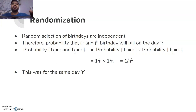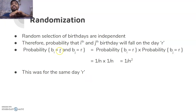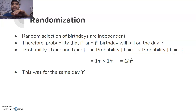We can't work purely with assumptions, so we introduce randomization — we randomly select two people and check whether their birthdays match. Using this randomized algorithm makes the selection process independent. Therefore, the probability that the i-th and j-th person share birthday on day r is: P(b_i = r AND b_j = r) = P(b_i = r) × P(b_j = r) = (1/n) × (1/n) = 1/n².